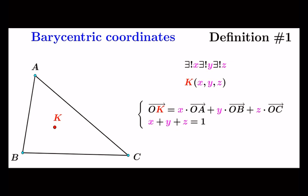To better understand the geometric interpretation of the barycentric coordinates, we firstly observe that the point K defines with the sides of the triangle ABC three triangles.